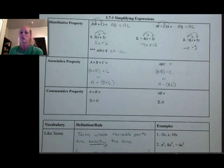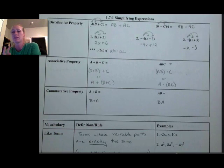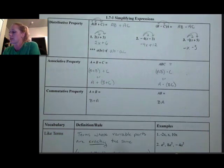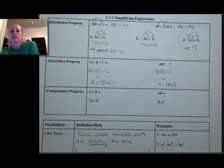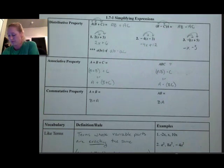The commutative property just says that the order does not matter. So a plus b is the same as b plus a. Two plus three is the same as three plus two. The same is true for multiplication. Division and subtraction do not work this way, so the commutative and associative properties are specific to addition and multiplication.